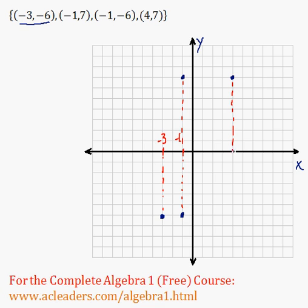And positive 4. And that's it. How are we going to show that? We're going to say x such that x is equal to negative 3, negative 1, and positive 4. That's it.